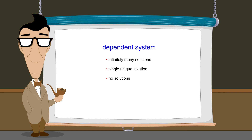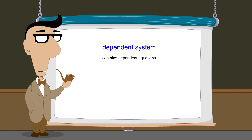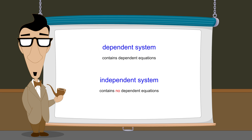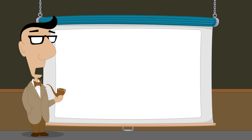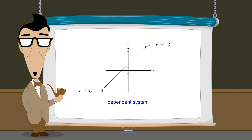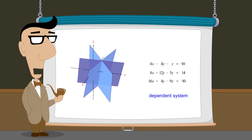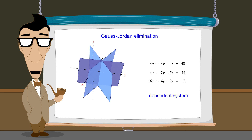Saying that a system is dependent simply means that some of the equations in the system are dependent. And saying that a system is independent simply means that none of the equations in the system are dependent. So how do we know whether or not a system of equations is dependent? It is usually easy to spot when two equations in the system are multiples of each other, but it is not always easy to tell when equations are linear combinations of two or more other equations. Fortunately, the process of Gauss-Jordan elimination automatically does this work for us. In the next lecture, we will see how this happens.